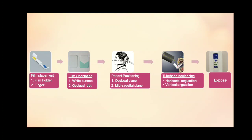To summarize the bisecting angle technique: firstly, a film is placed either by using a film holder or a finger. Then comes film orientation — the wide surface should face the teeth or tube head and the occlusal dot should be at the occlusal level. Then patient positioning — the occlusal plane should be parallel to the floor and mid-sagittal plane perpendicular to the floor. In tube head positioning, horizontal and vertical angulation should be taken care of, and finally the exposure is made.